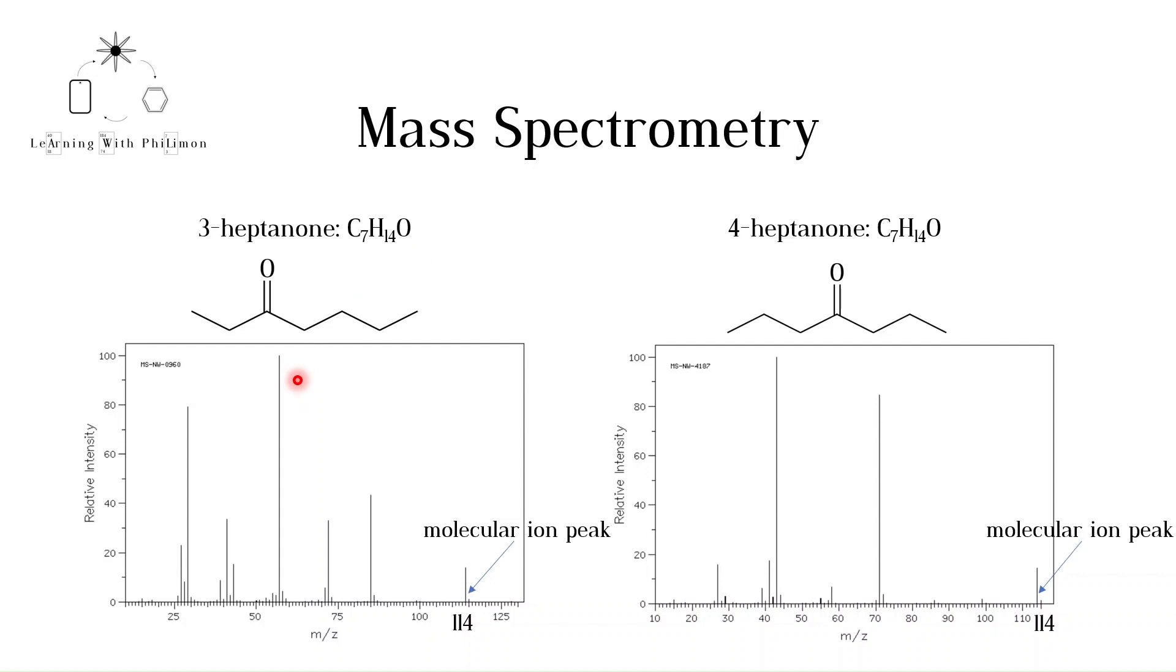3-heptanone has a peak with 100% intensity at a mass-to-charge ratio of 57. This could be due to this fragment, C4H9+. We do not see a large peak at 57 for 4-heptanone, because it is not likely for this ion to form.